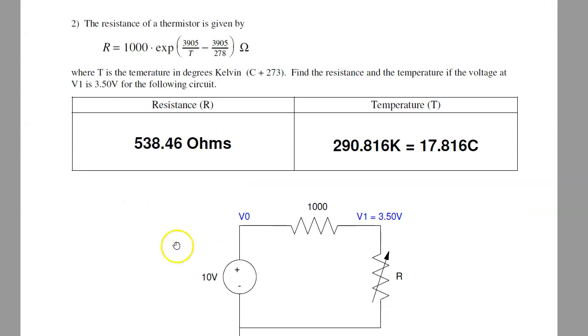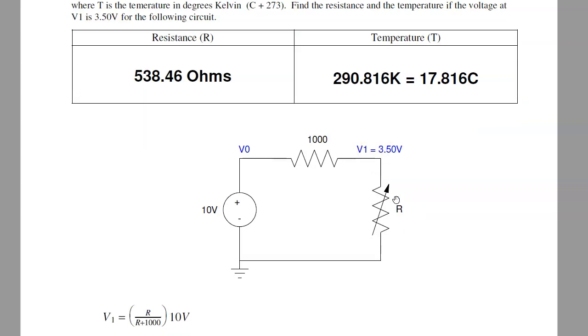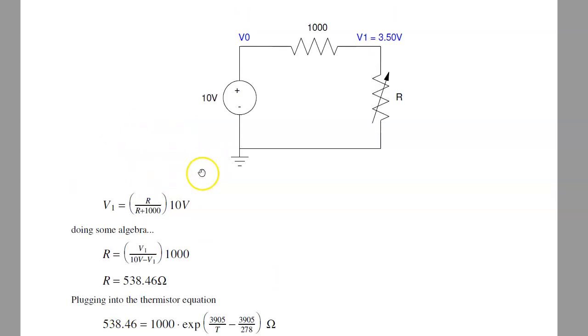Problem two is calculations. If I have a thermistor and measure 5 volts, or 3.5 volts across it, what's the resistance? What's the temperature? To find the resistance, I use voltage division. The voltage is R1 over R1 plus R2 times 10 volts. Solving backwards, it'll be V1 over 10 minus V1 times 1000. That's a little bit of algebra to get there, gives you 538.46 ohms.